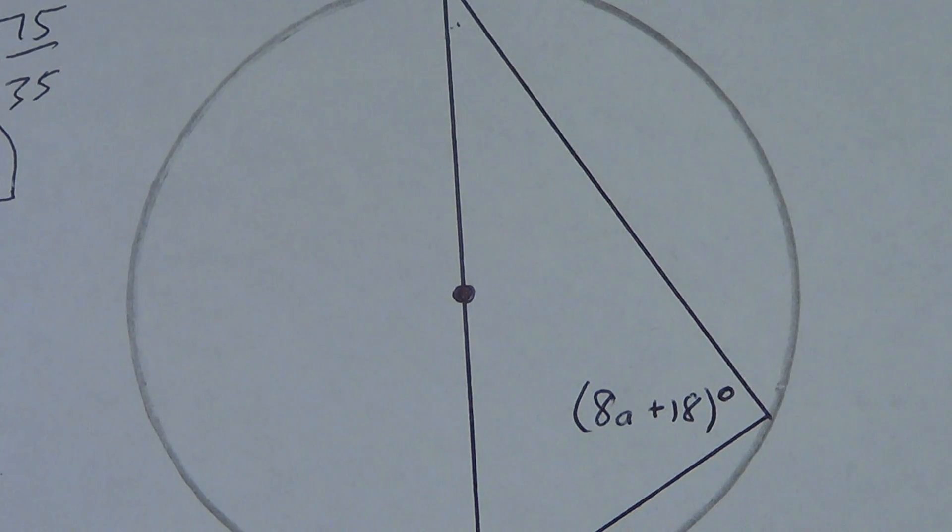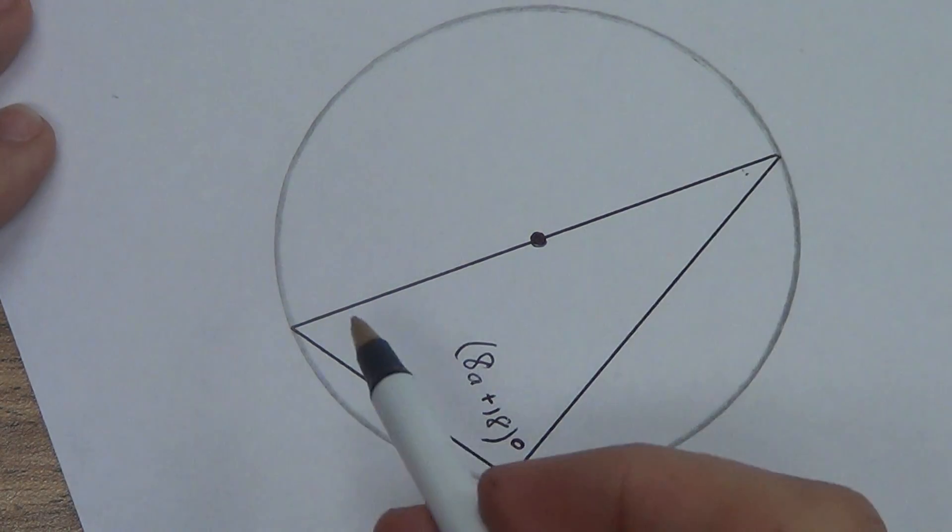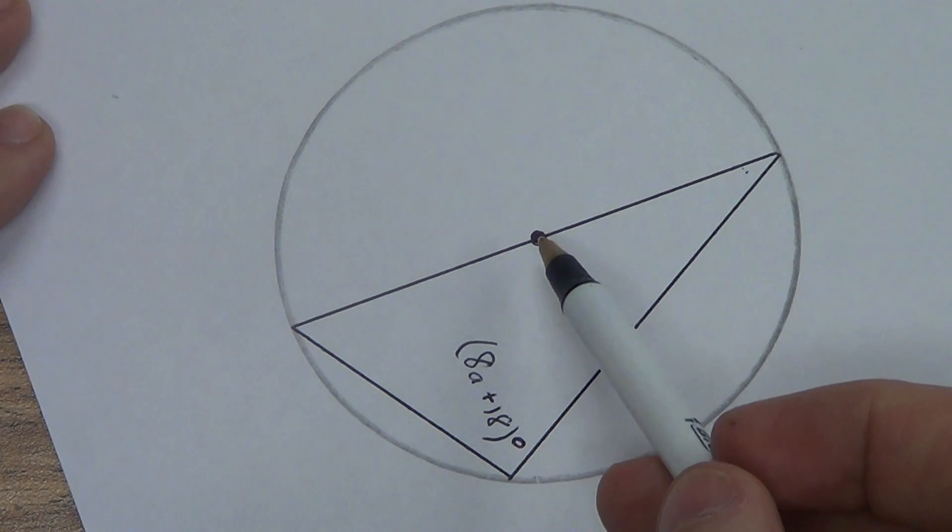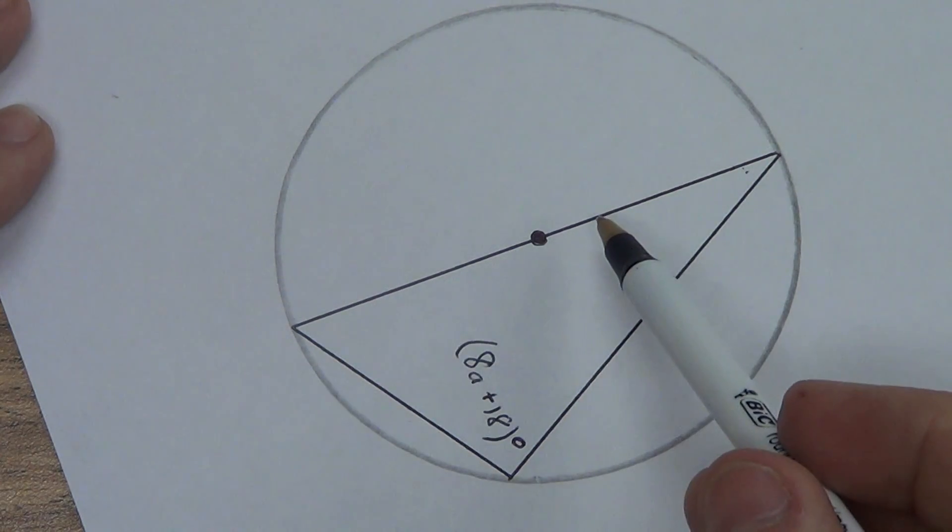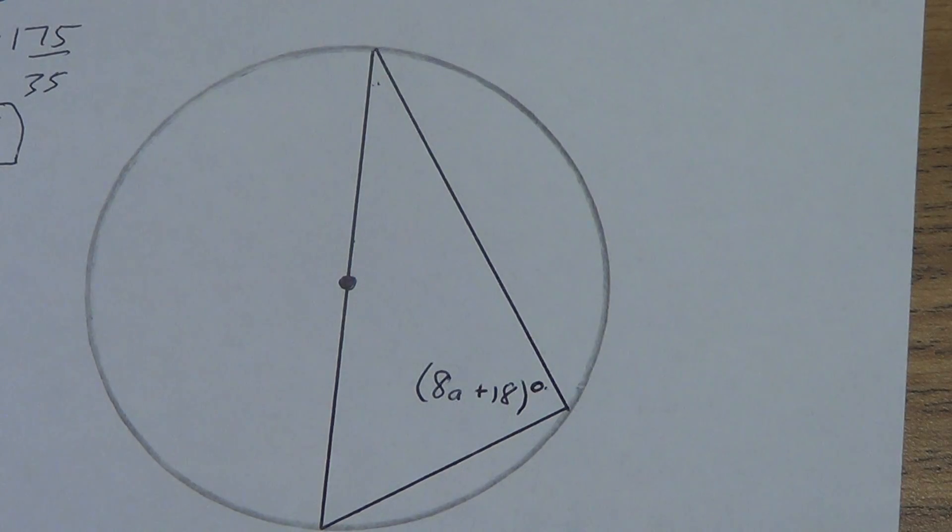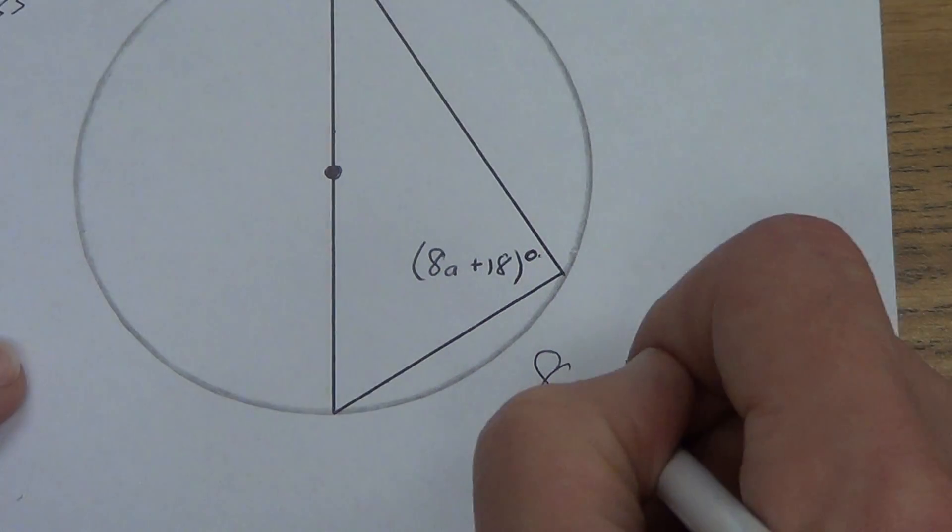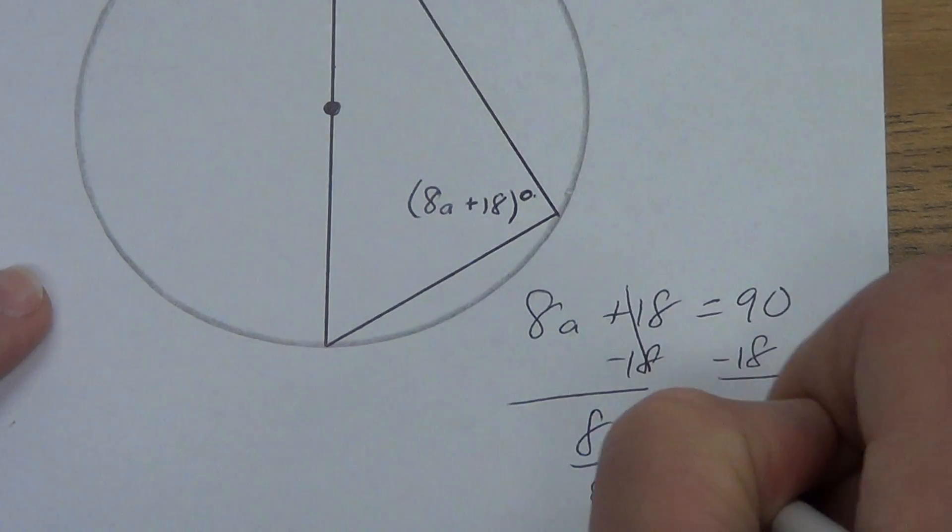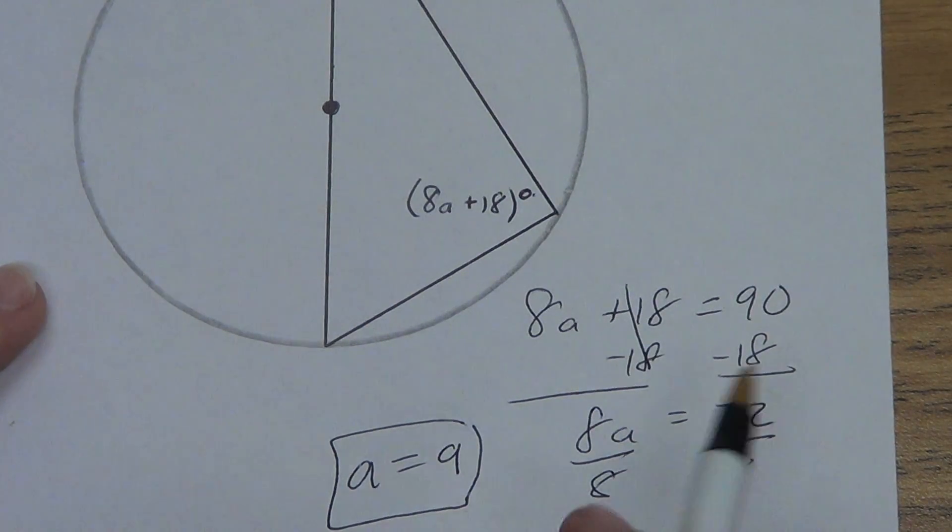Fourth example, we're almost done. It looks like we have a right triangle. Well, is it a right triangle? It's a triangle inscribed in a circle, it's a diameter, center of the circle going through it. So yes, it is a right triangle. If a triangle is inscribed in a circle and one side is a diameter, then it is a right triangle and the diameter is the hypotenuse. That means this angle must equal 90 degrees. This is a pretty easy algebra problem: 8a plus 18 equals 90. Subtract 18, 8a equals 72. Divide by 8, a equals 9. Don't need a degree symbol, I already have it right there.